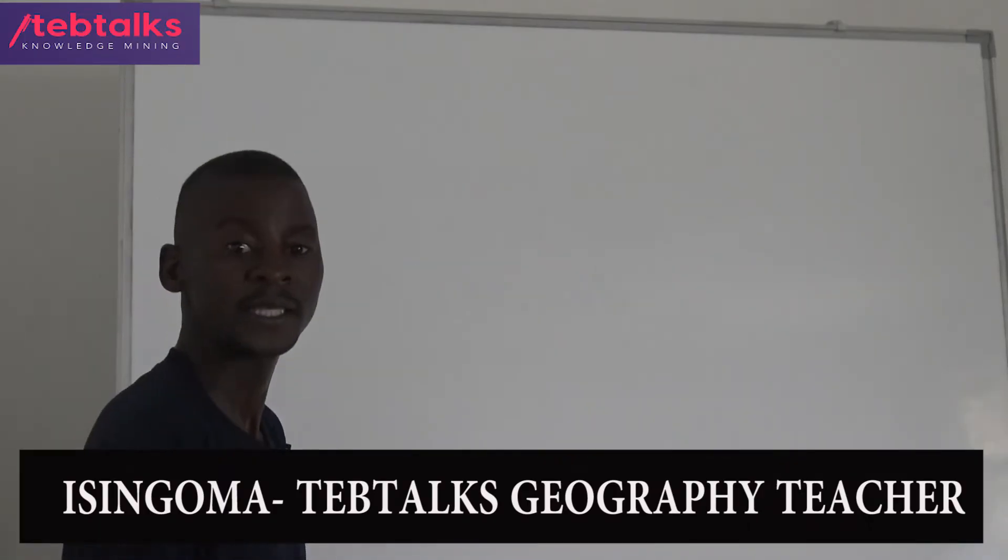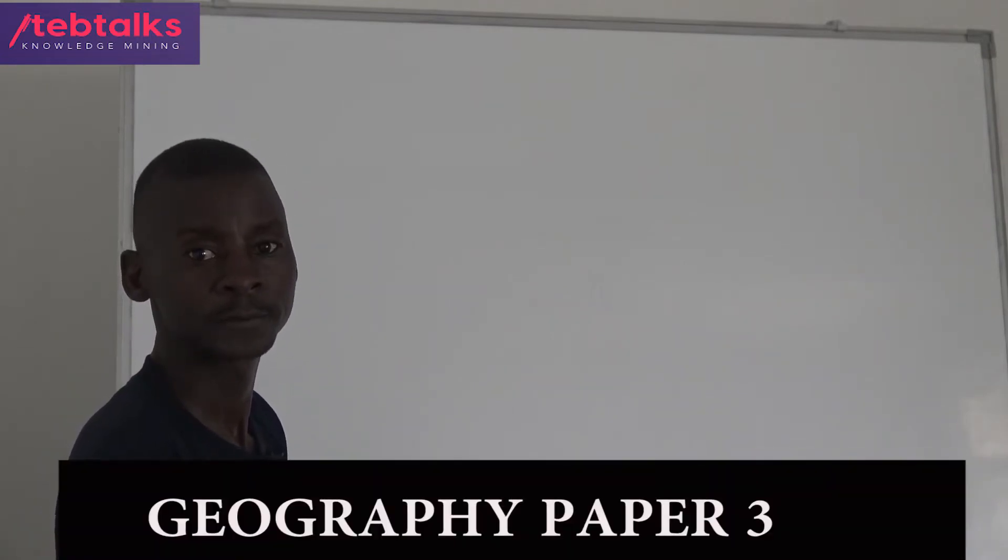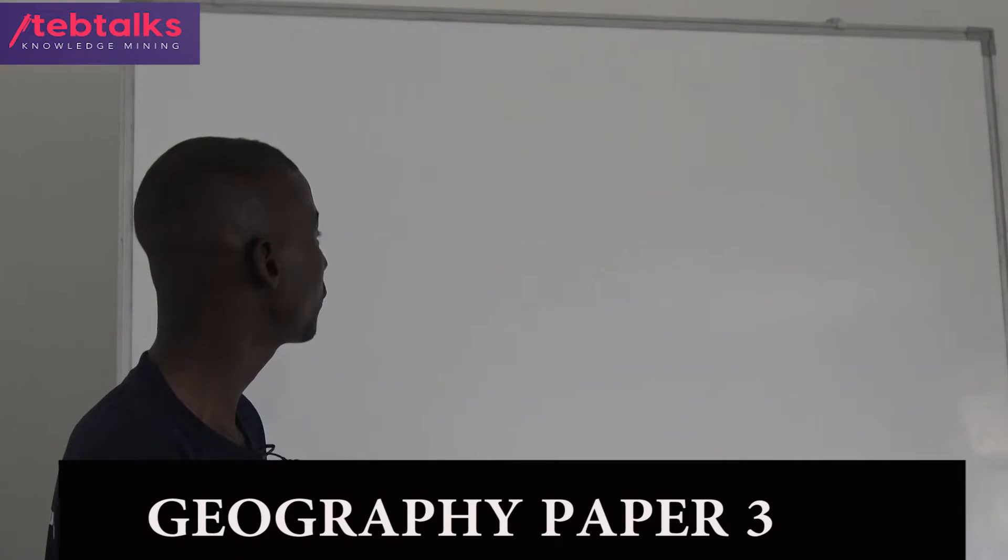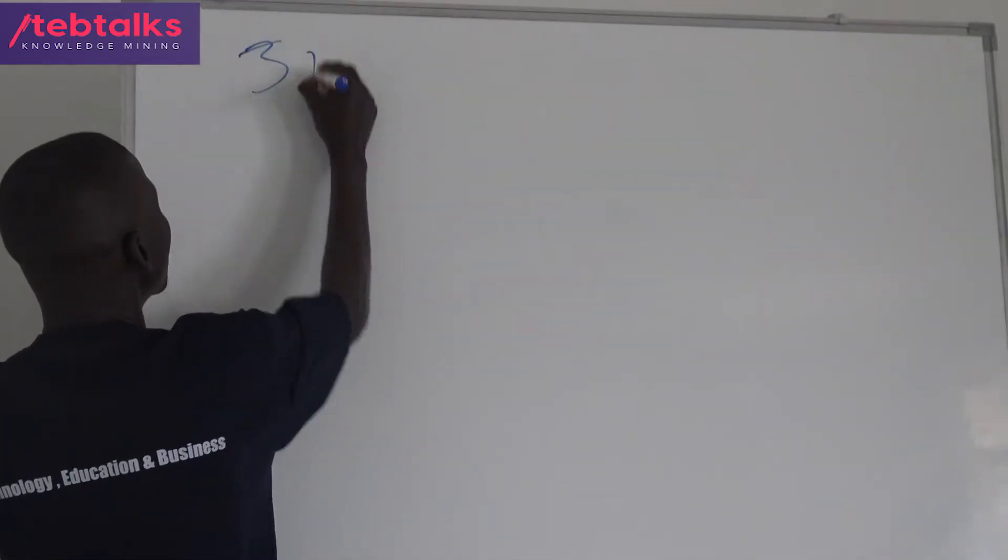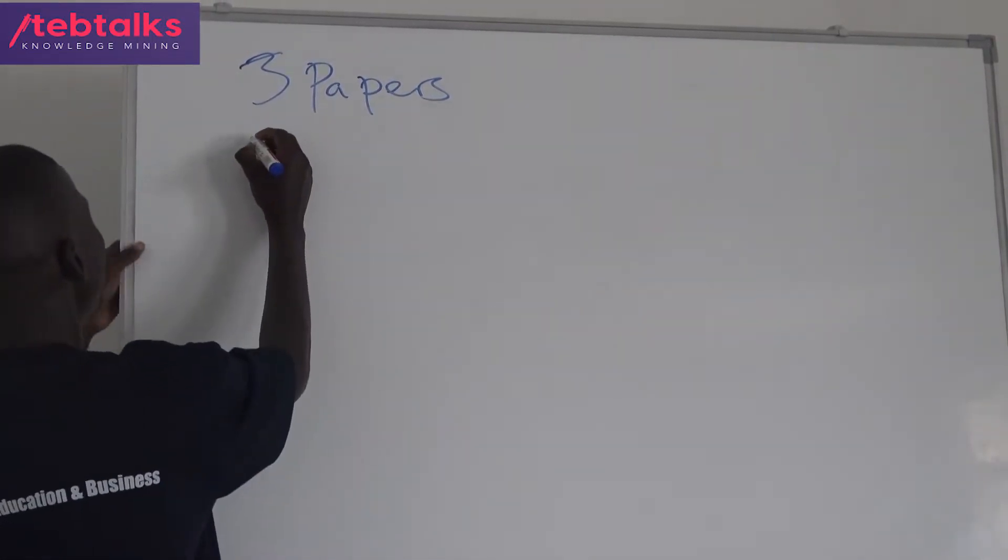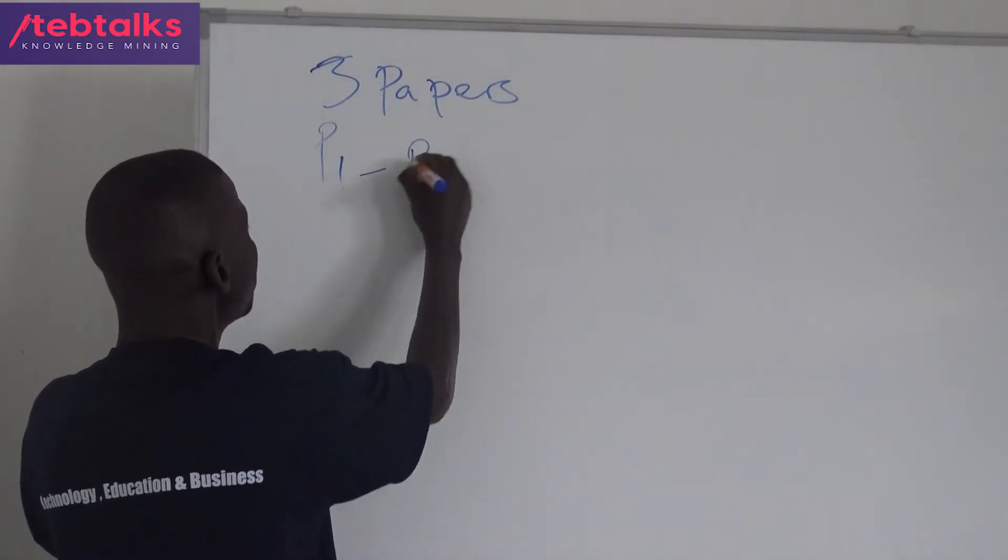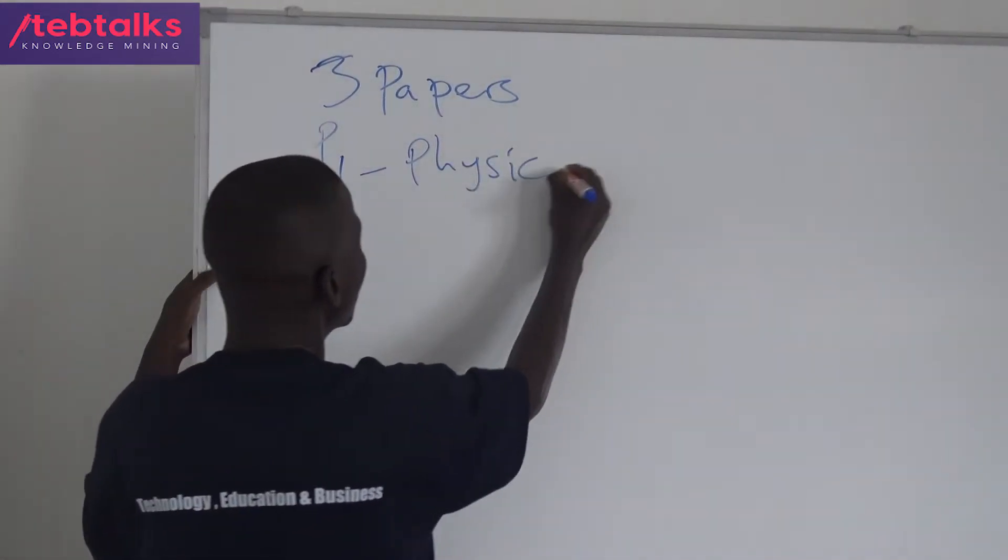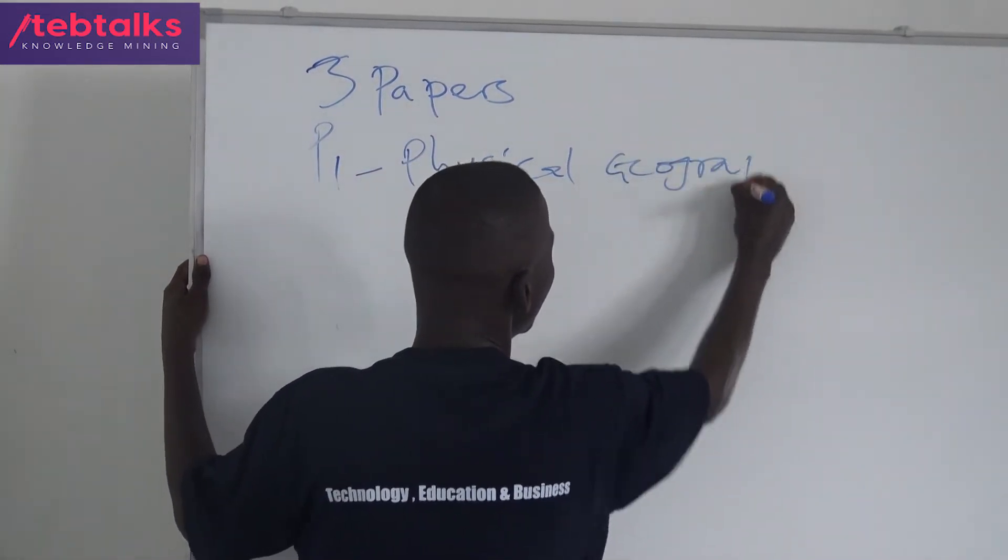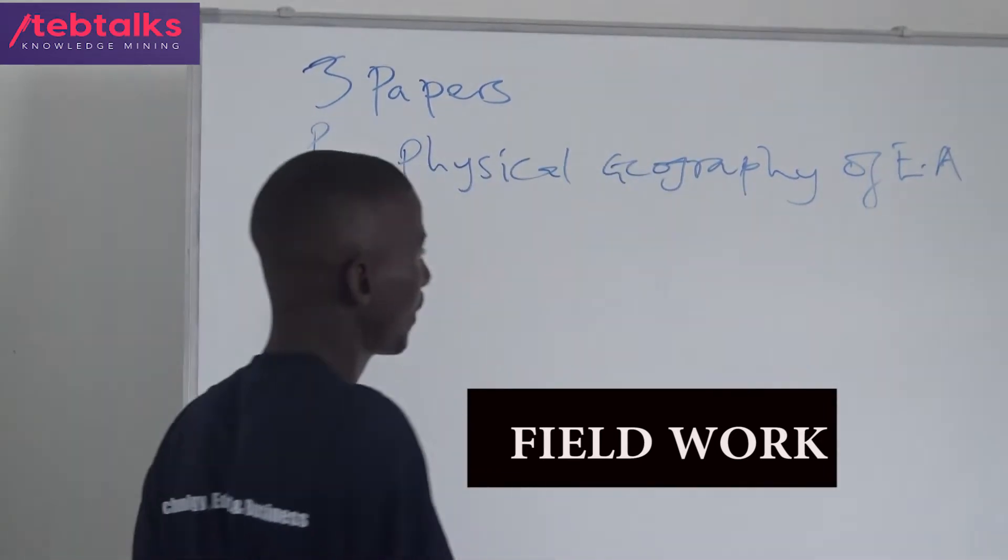Dear learners, my name is Singoma Amatorius, a Geography teacher, and I'm going to be taking you through Geography of O-level. Geography of O-level has three papers. The first is Geography Paper 1, also called the Physical Geography of East Africa.